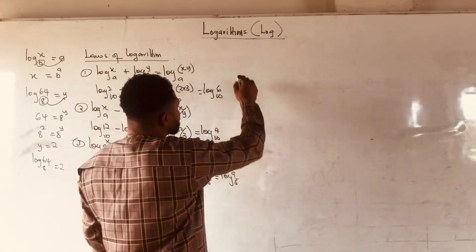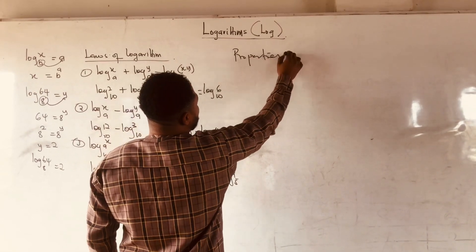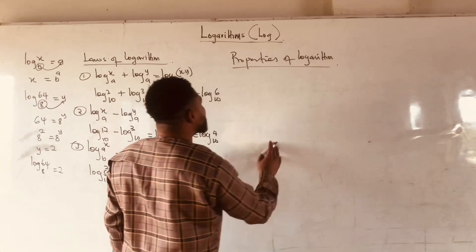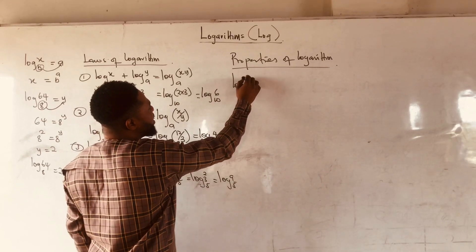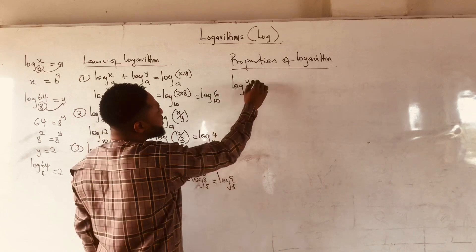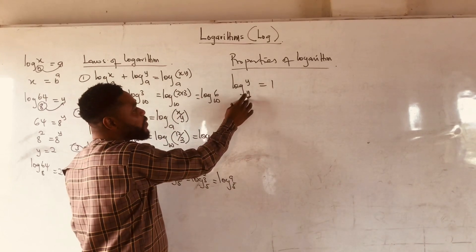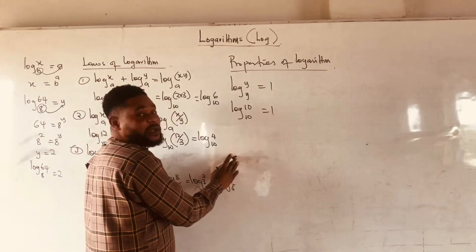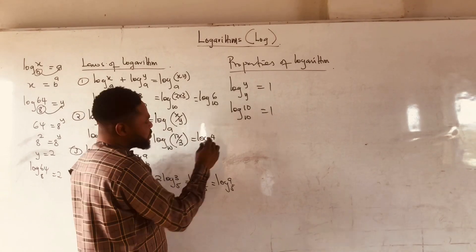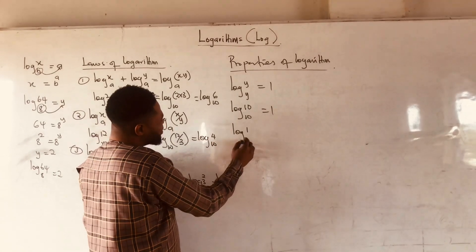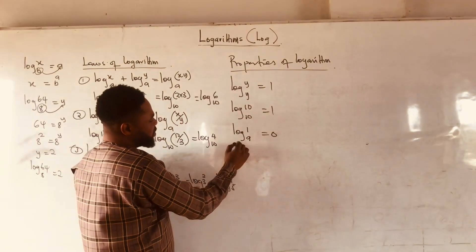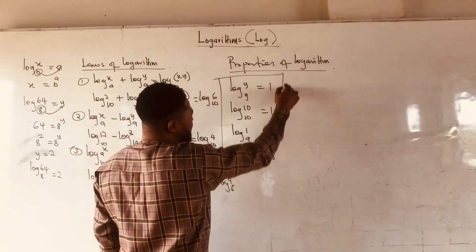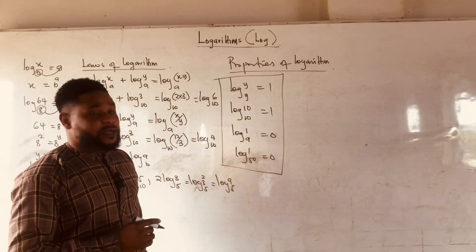Let us look at the properties of logarithm. If you have log of any number to the base of the same number, it is equal to 1. So log y base y is 1; for example, log 10 base 10 is equal to 1. Property number 2: log 1 to any base is equal to 0. So if I have log 1 base 50, the answer is 0. These are some few properties of log.